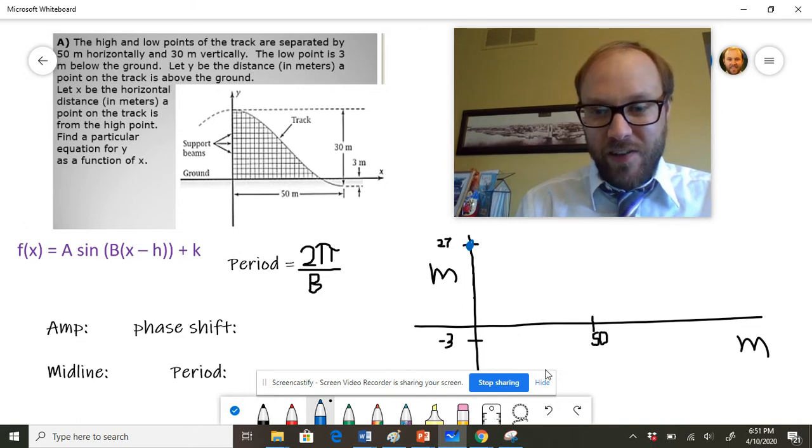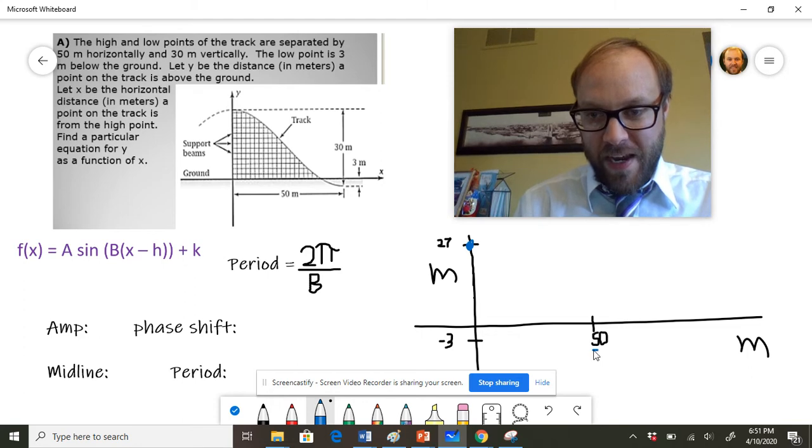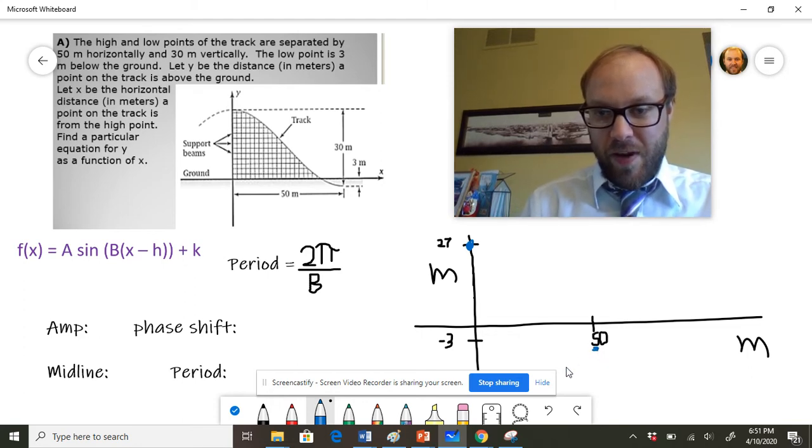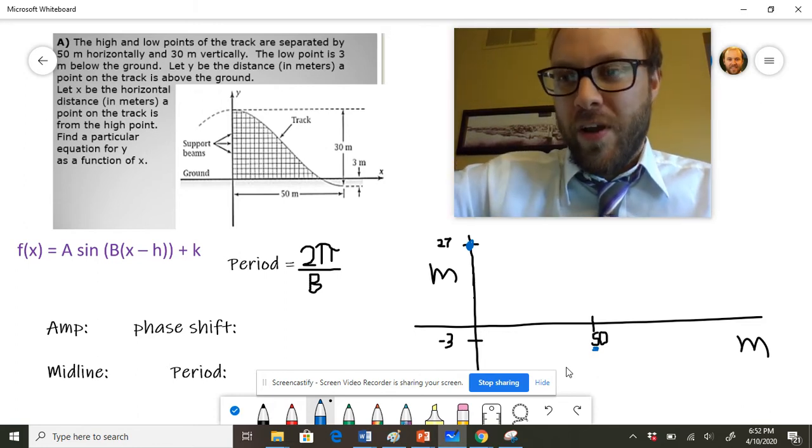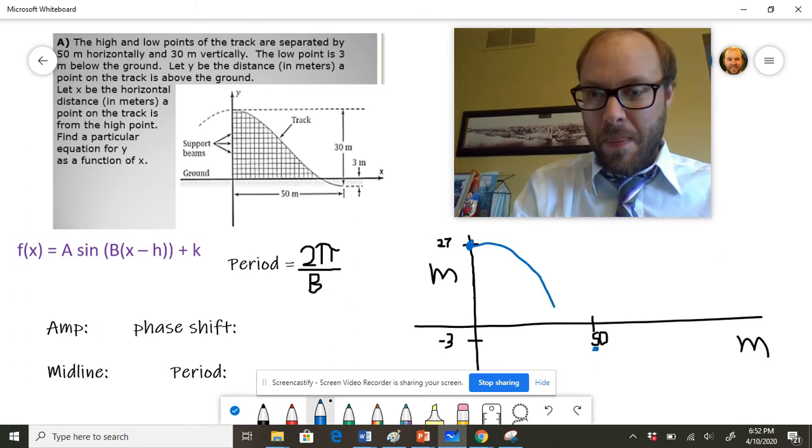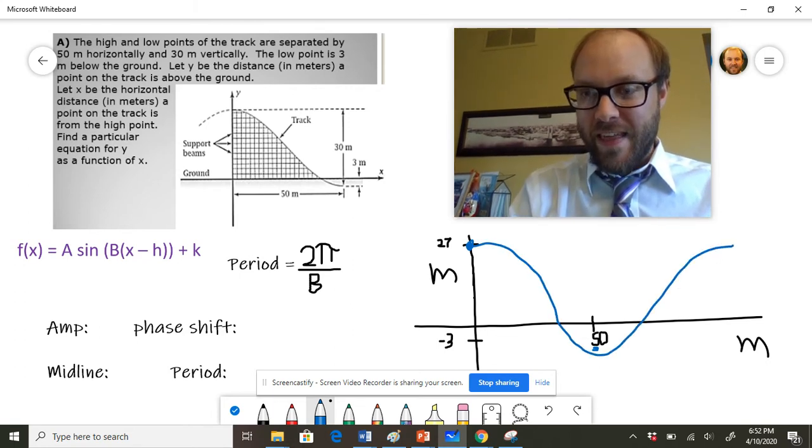It reaches its low point 3 feet below the ground after 50 meters. So the point (50, -3) is also going to be a point. So basically, I have this curve going off in this direction, cutting down through like this.